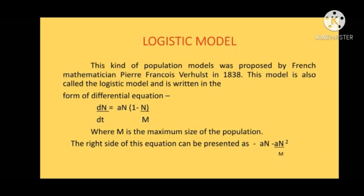Logistic Model. This kind of population models was proposed by French mathematician Pierre-Francois Verhulst in 1838. This model is also called the logistic model and is written in the form of differential equation dN/dt equals aN(1 - N/M), where M is the maximum size of the population.